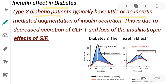Now let's discuss the incretin effect in diabetes. In type 2 diabetic patients, there is little or no incretin-mediated augmentation of insulin secretion. This is due to decreased secretion of glucagon-like peptide 1 and also reduced insulinotropic effects of glucose-dependent insulinotropic peptide. In this graph you can see the reduced incretin effect in type 2 diabetic patients compared to the greater normal response in healthy patients.